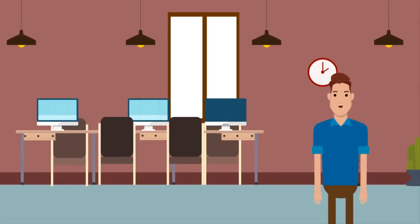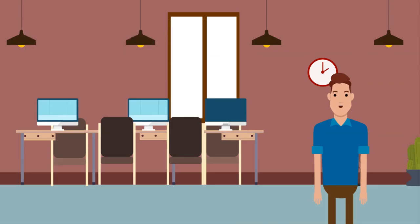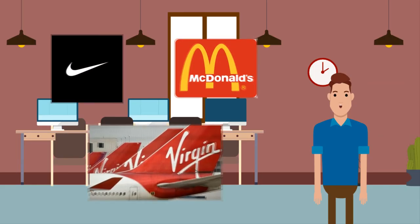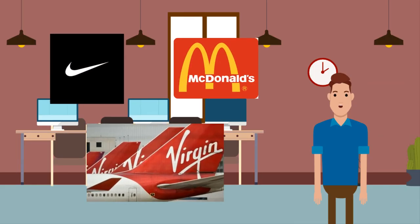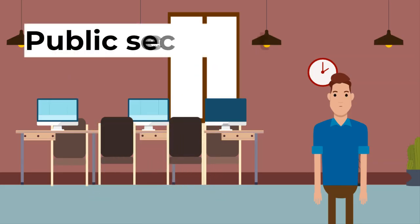Finally for today, the private and public sector. First, the private sector — this is where private individuals own and run business ventures. Their aim is to make a profit, and all costs and risks of the business are undertaken by the individual. Examples are Nike, McDonald's and Virgin Airlines.